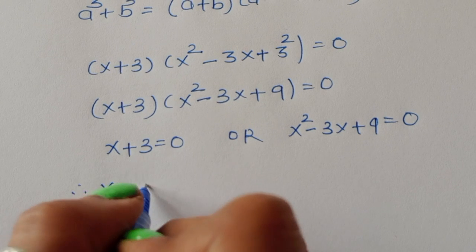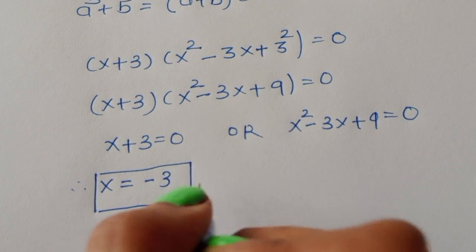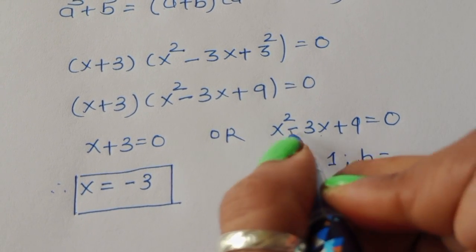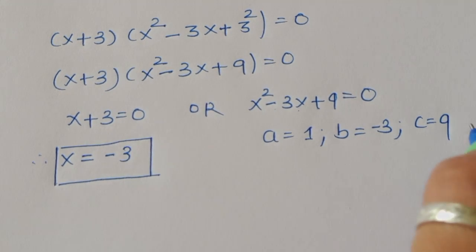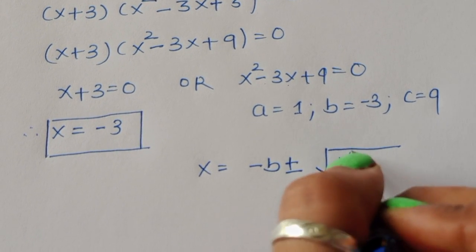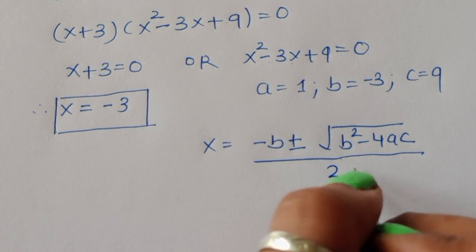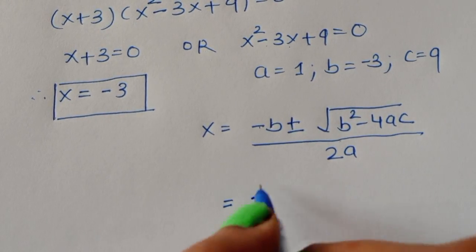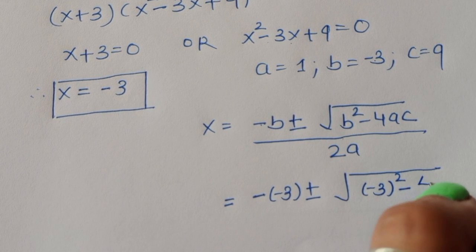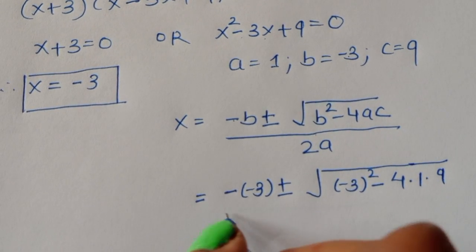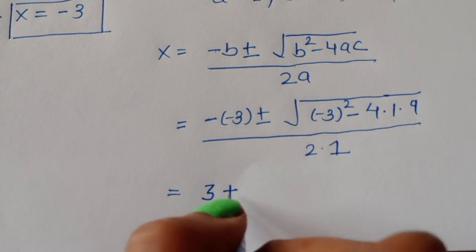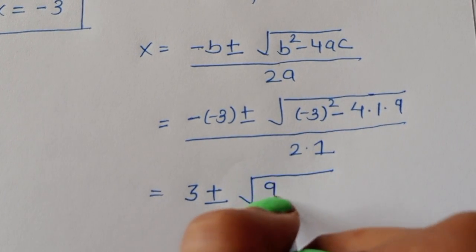From x + 3 = 0, x = -3. For x² - 3x + 9 = 0, we identify a = 1, b = -3, c = 9. Using the quadratic formula x = (-b ± √(b² - 4ac)) / 2a, we substitute: x = (3 ± √(9 - 36)) / 2.